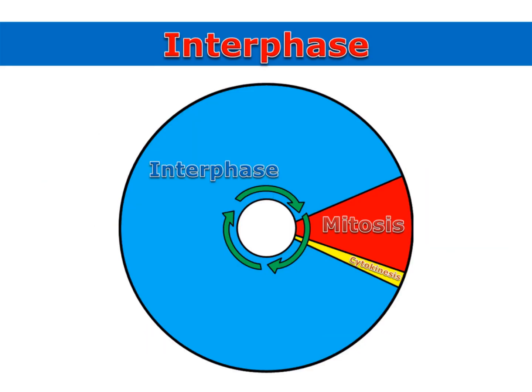Once the cell has passed through the G1, S, and G2 phases, the cell will leave interphase and enter mitosis.